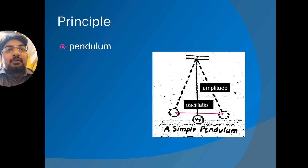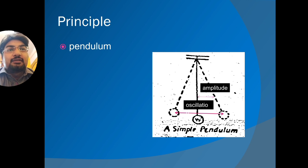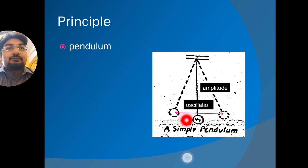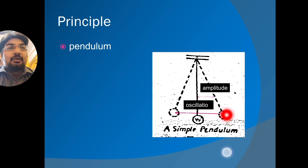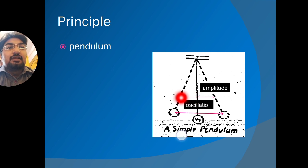What is a pendulum? By definition, a simple pendulum is a heavy particle suspended by a weightless thread and free to move to and fro. When the pendulum is at rest, the thread or rope is vertical. If the particle is drawn to one side and released, the pendulum will swing to and fro. One complete swing in each direction is called an oscillation. The extent of the swing to any one side from the vertical is the amplitude.